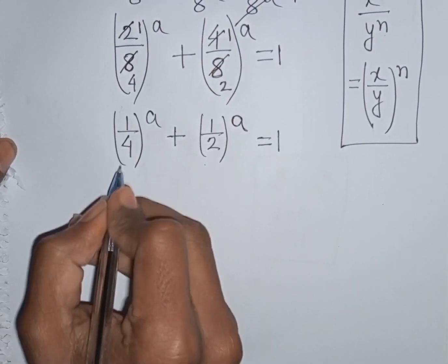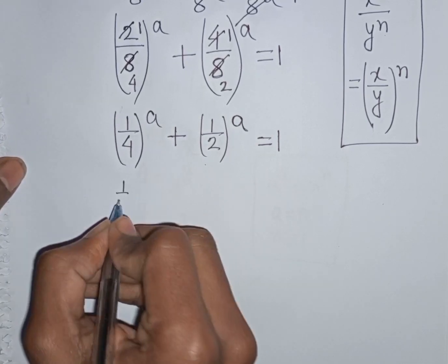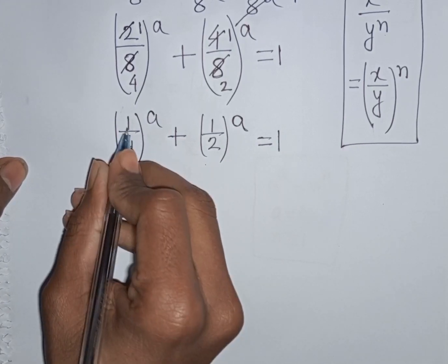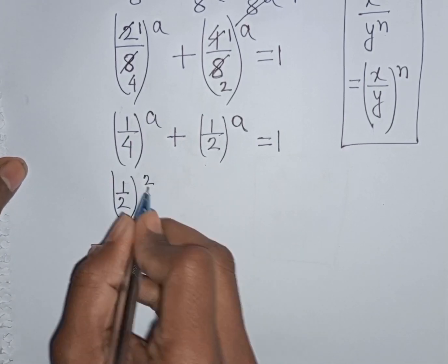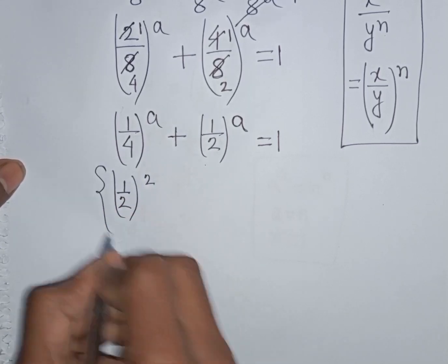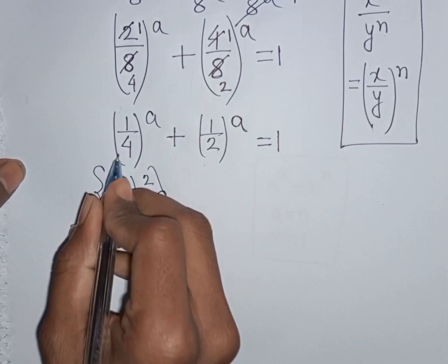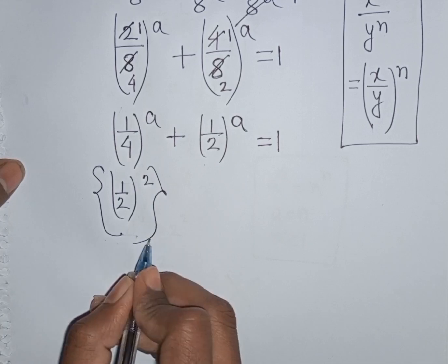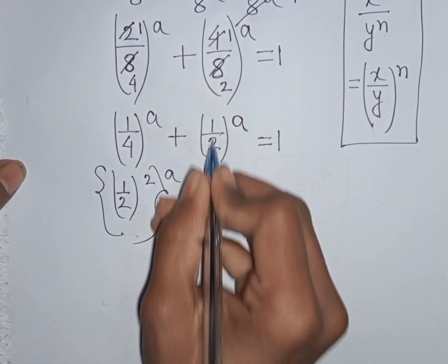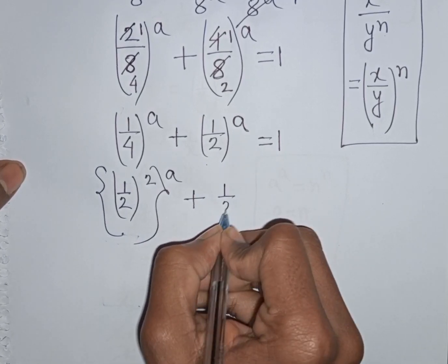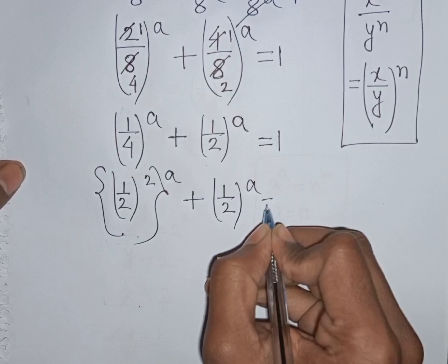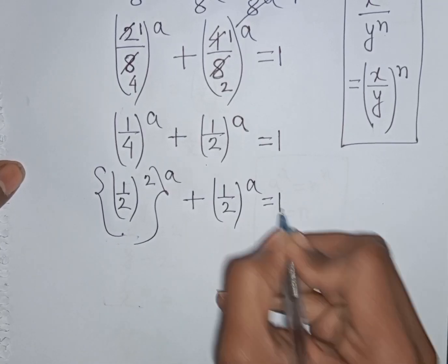Now, 1/4 can be written as (1/2) bracket power 2, because 1 squared is 1 and 2 squared is 4. So then (1/4) can be replaced by (1/2) bracket power 2, giving us (1/2) bracket power A — applying the rewrite.